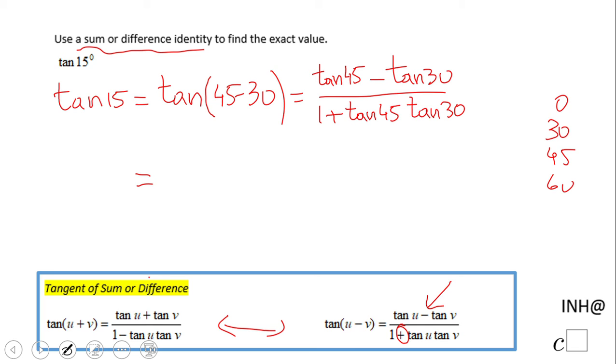Tangent of 45 is 1, that's an easy one. For tangent of 30, since I didn't memorize it, I use sine of 30 over cosine of 30. Sine of 30 is one-half, and cosine of 30 is square root of 3 over 2.